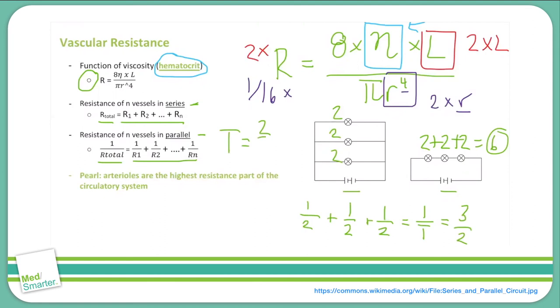For three vessels in parallel, you can see that adding vessels in parallel actually lowers the resistance. One final thing to mention about resistance is that the arterioles are the highest resistance vessel in the circulatory system. This is something that I've gotten a lot of questions on and one thing I think you should really remember about resistance.